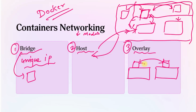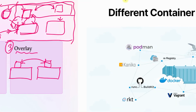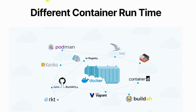Each networking mode has its own advantages and disadvantages, and the mode you choose will depend on your specific use case. Bridge mode is useful for applications that require isolation, host mode is useful for applications requiring direct network access, and overlay mode is used when communicating between containers on different hosts. These are the different networking modes available for containers in Docker.